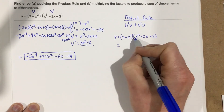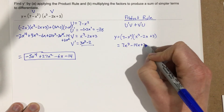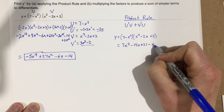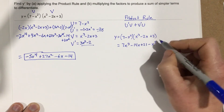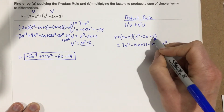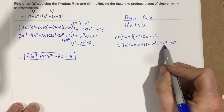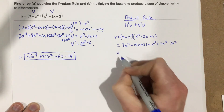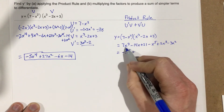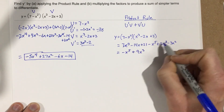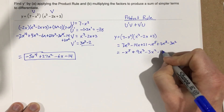Distributing: 7 times x cubed is 7x cubed. 7 times negative 2x is negative 14x. 7 times 3 is 21. Negative x squared times x cubed is negative x to the fifth. Negative x squared times negative 2x is positive 2x cubed. Negative x squared times 3 is minus 3x squared. Combining the x cubed terms gives negative x to the fifth plus 9x cubed minus 3x squared minus 14x plus 21.